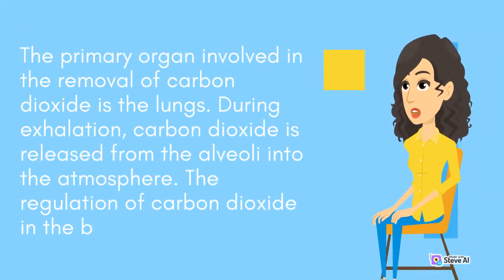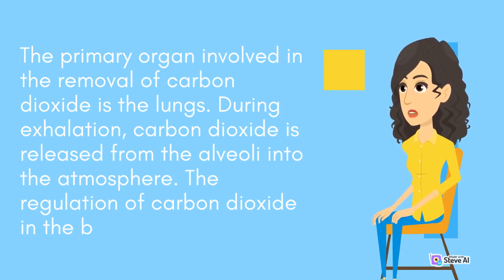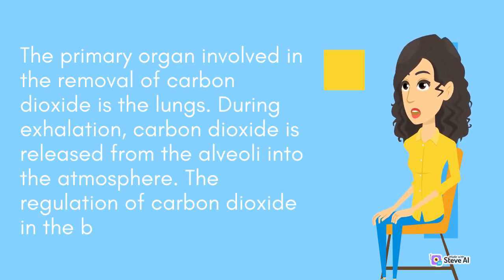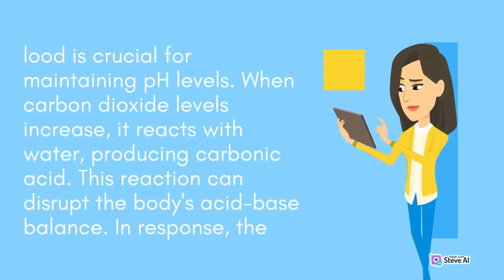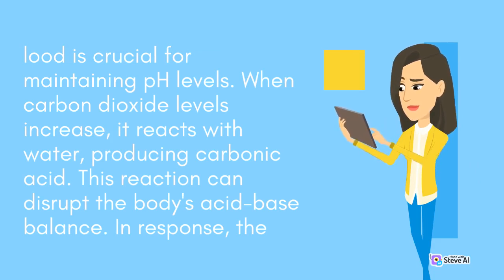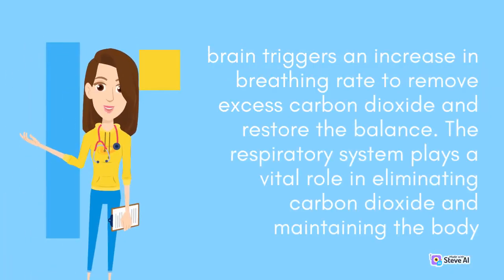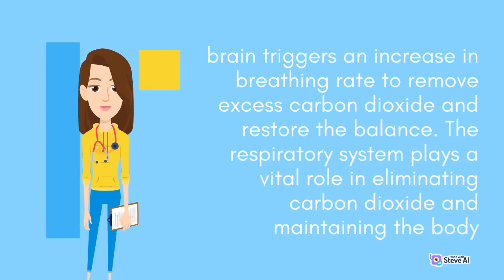The primary organ involved in the removal of carbon dioxide is the lungs. During exhalation, carbon dioxide is released from the alveoli into the atmosphere. The regulation of carbon dioxide in the blood is crucial for maintaining pH levels. When carbon dioxide levels increase, it reacts with water, producing carbonic acid. This reaction can disrupt the body's acid-base balance. In response, the brain triggers an increase in breathing rate to remove excess carbon dioxide and restore the balance. The respiratory system plays a vital role in eliminating carbon dioxide and maintaining the body.